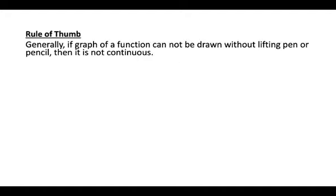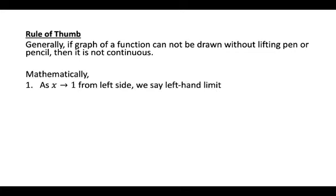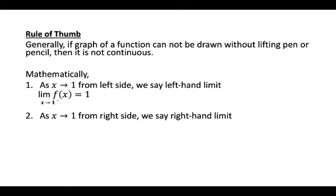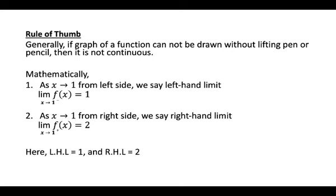Generally, if the graph of a function cannot be drawn without lifting the pen or pencil, then it is not continuous. Mathematically, as x tends to 1 from the left side — the left hand limit — and x tends to 1 from the right side — the right hand limit — the left hand limit is 1 and the right hand limit is 2. Since left hand limit is not equal to right hand limit, the function is not continuous.